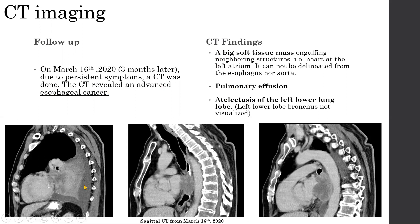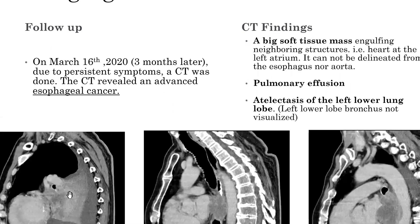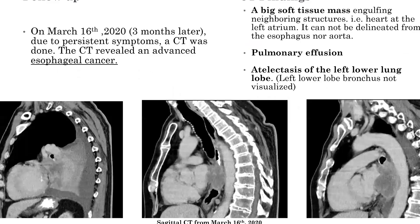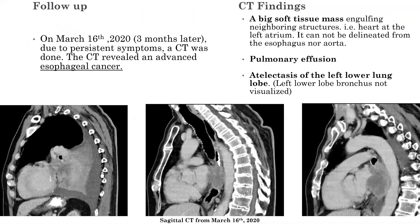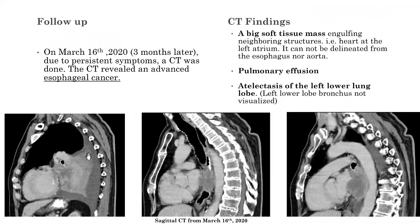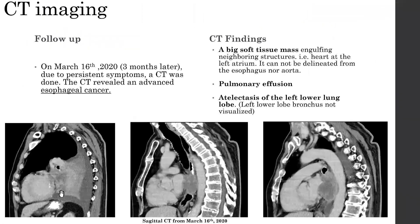On the CT images, the darkened density represents pleural effusion. A demarcating line is visible which separates the left lower lung lobe atelectasis from the soft tissue mass itself.